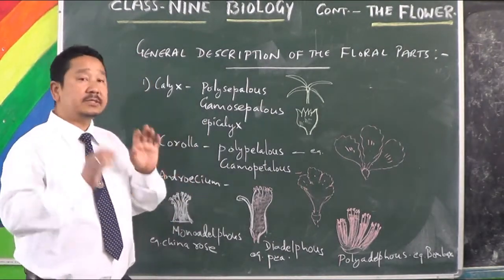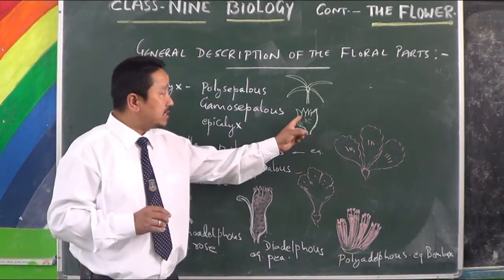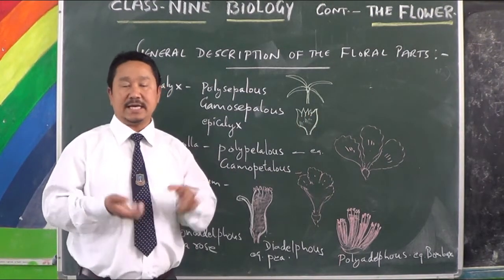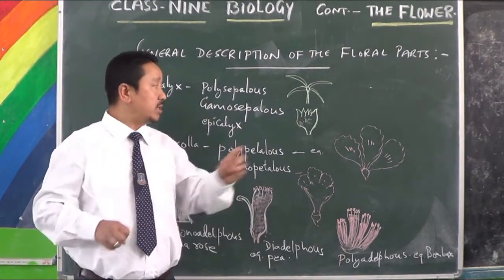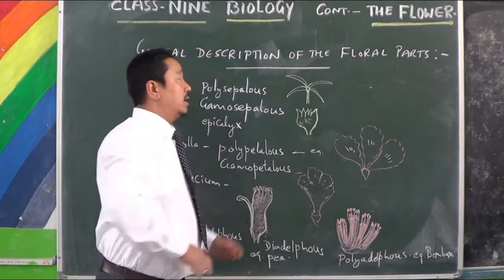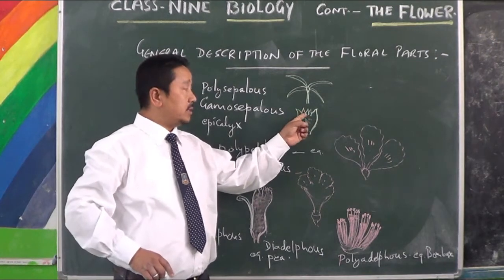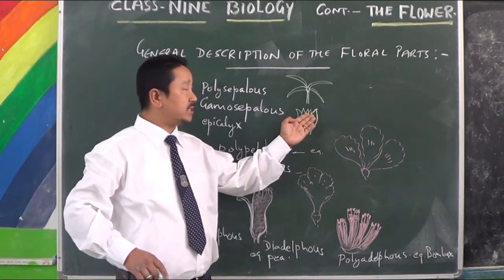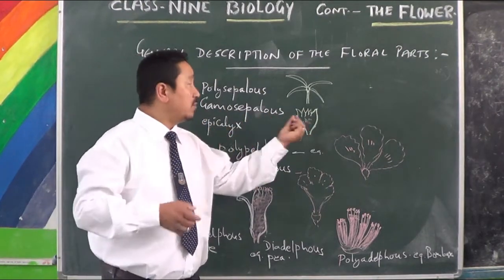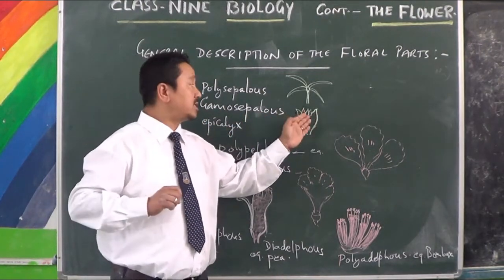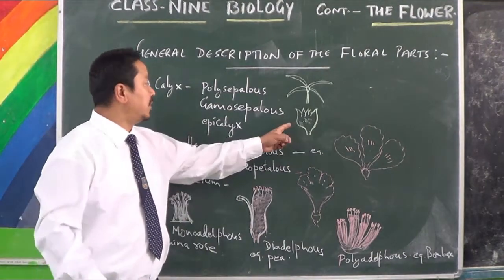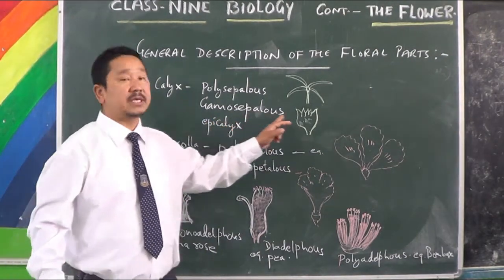Similarly, in some cases the sepals are united — they are joined or fused together. When most of the part of the sepals is fused and joined together, such an arrangement of sepals is called gamosepalous.